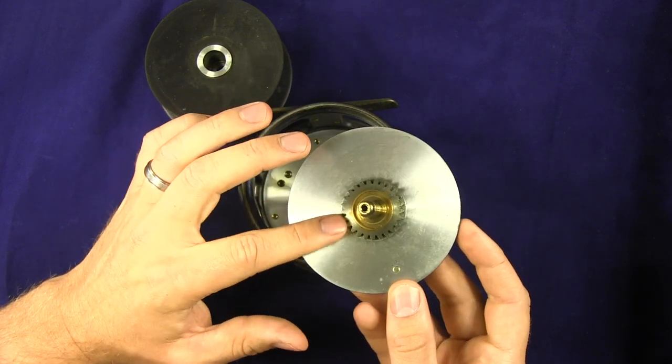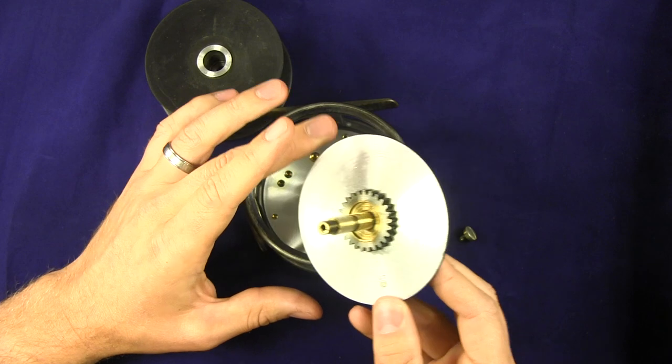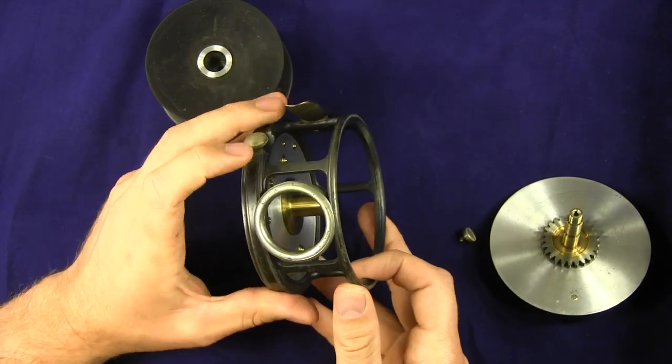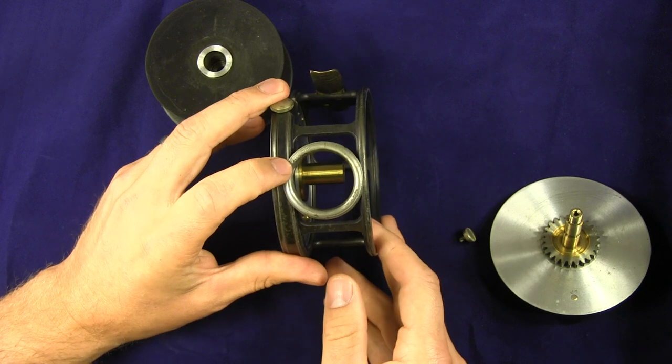This example here has really nice teeth on it, no real wear to it. You'll see on the line guard, it's got a Hardy Brothers marking on there.